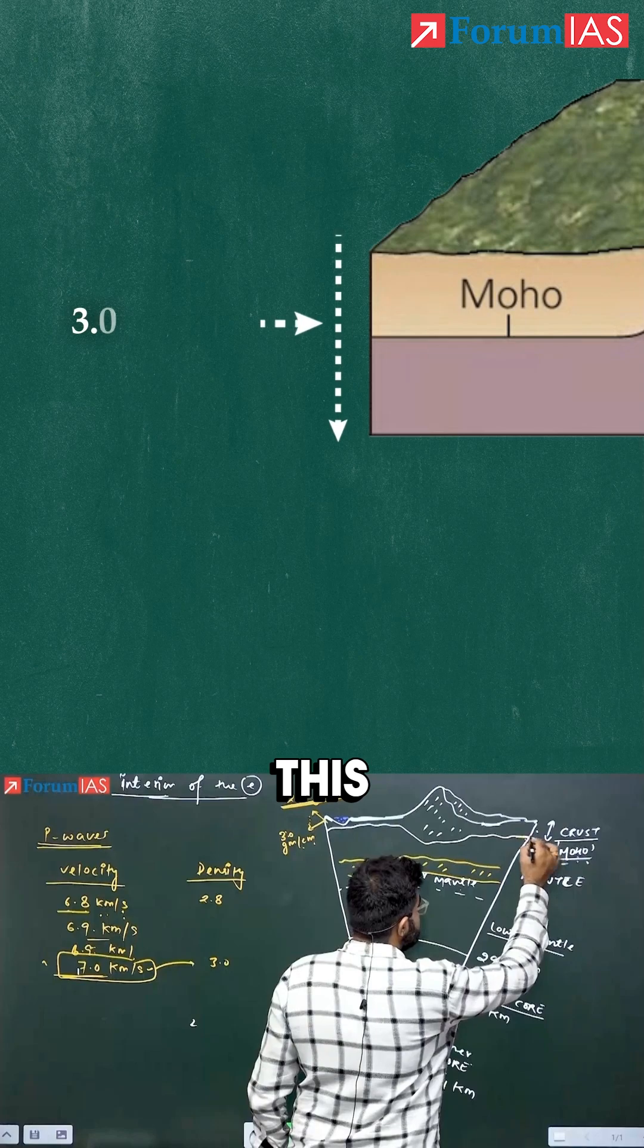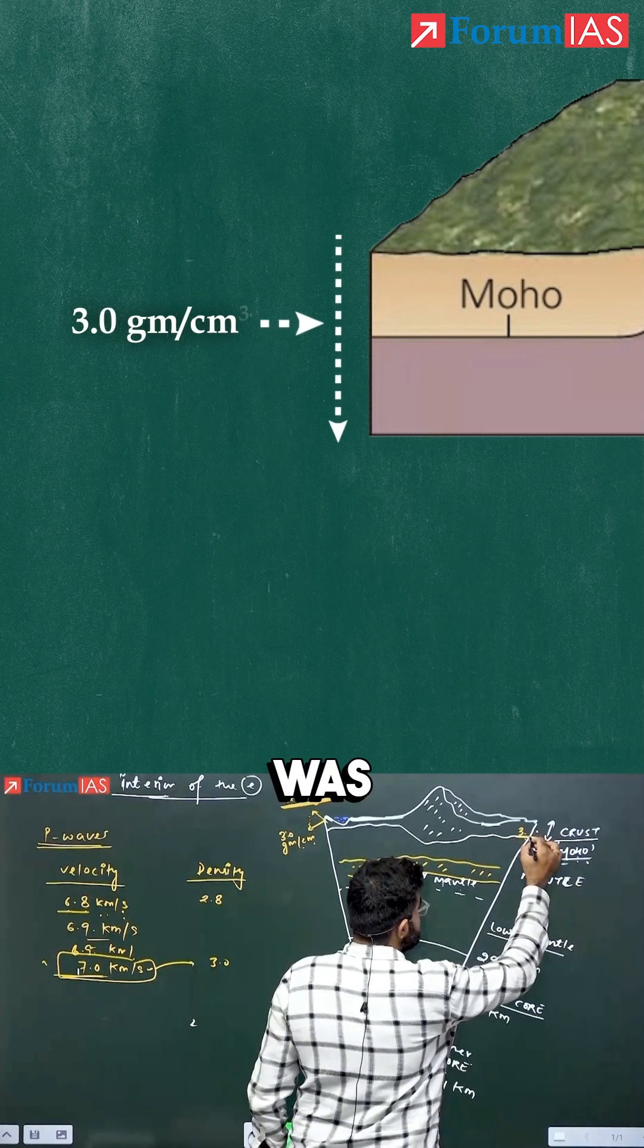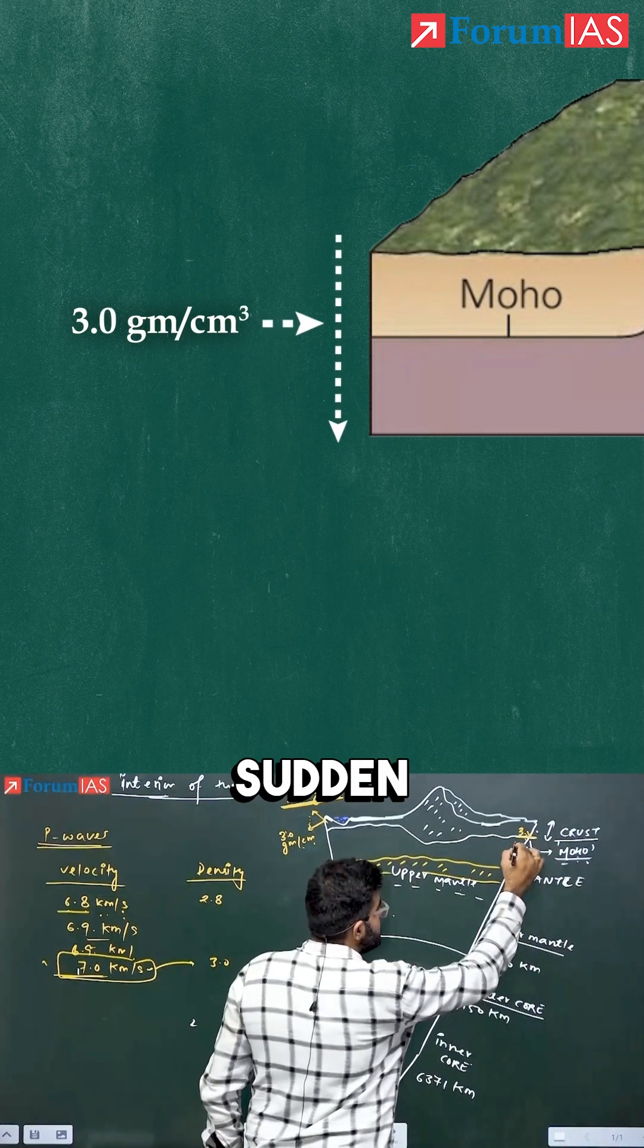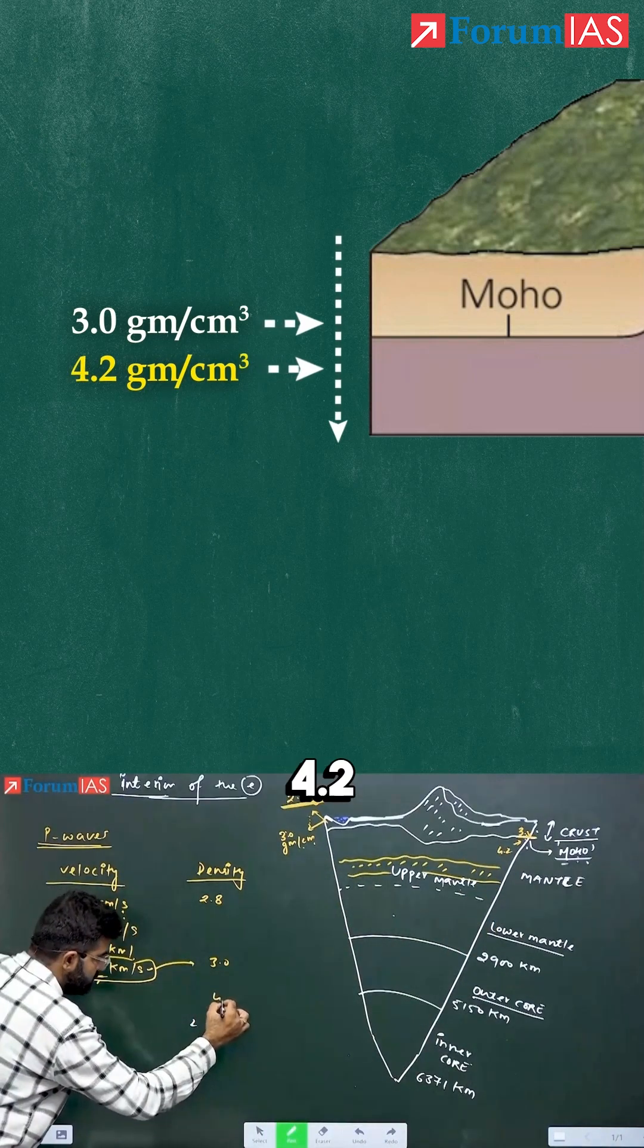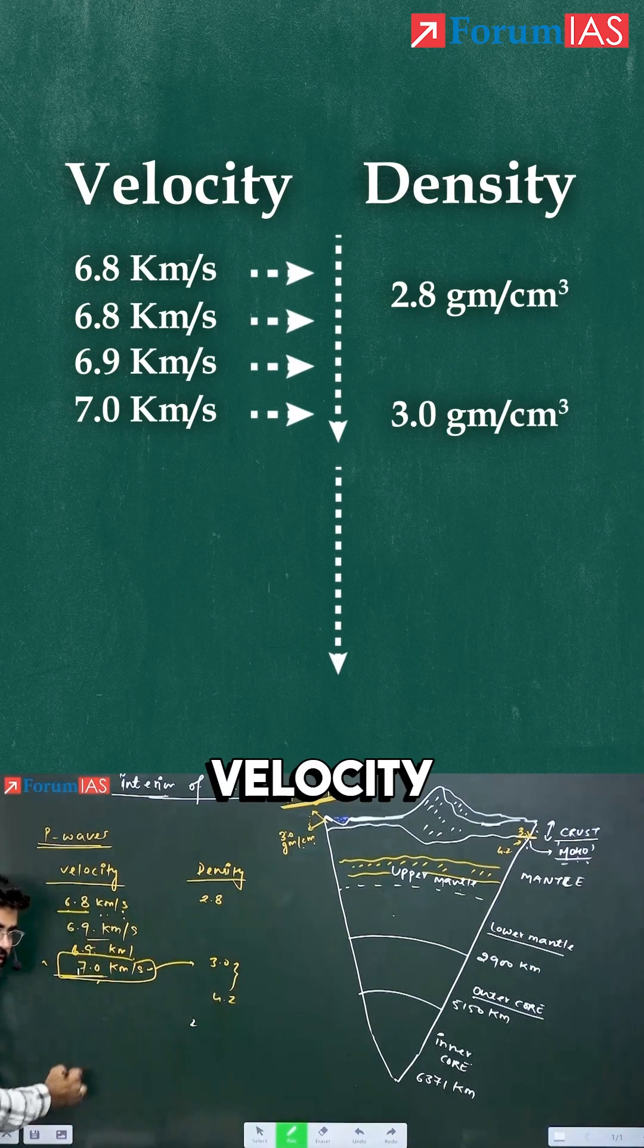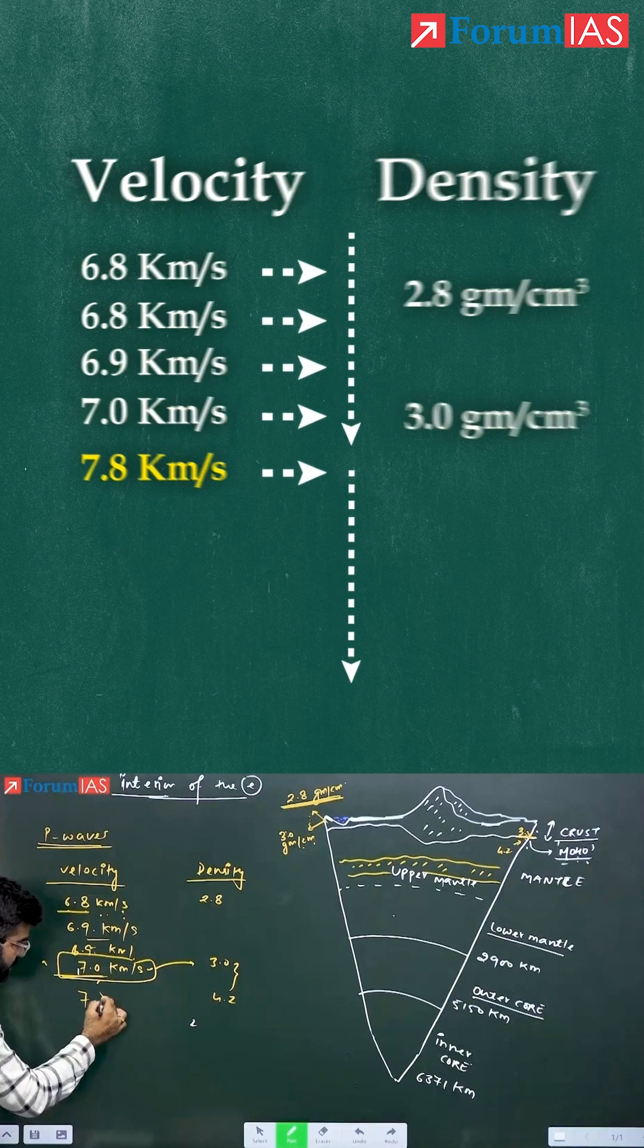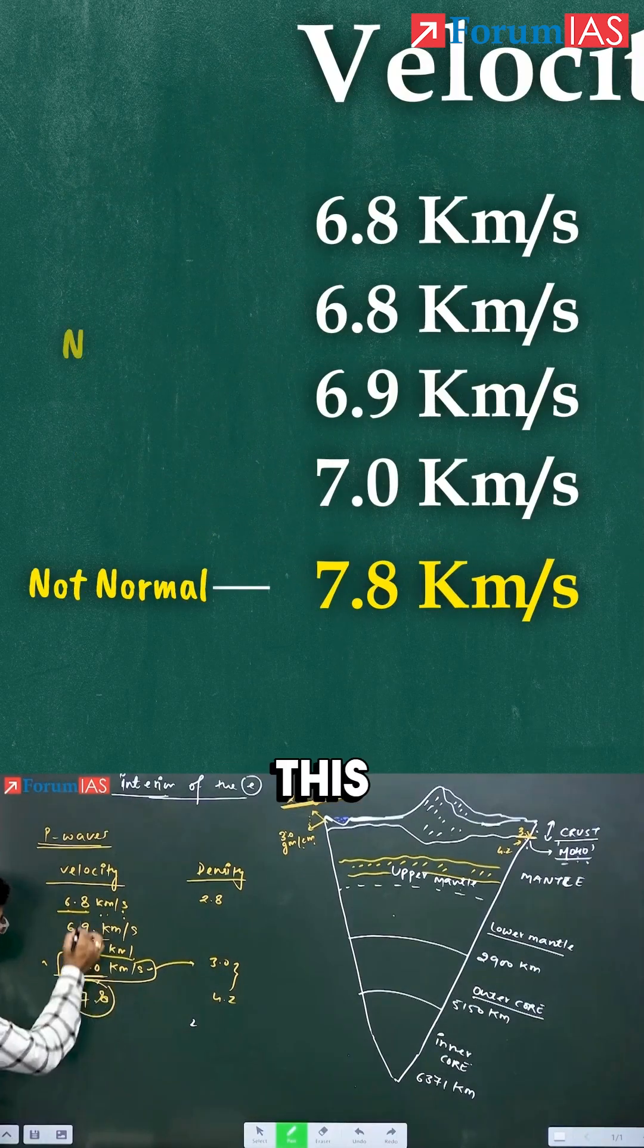All of a sudden, now the 3.0 was the maximum density up to here. All of a sudden the density increases and this happens to be 4.2. What would be the indication? The velocity will increase—let's say 7.8. So this spike is not normal, these are normal spikes.